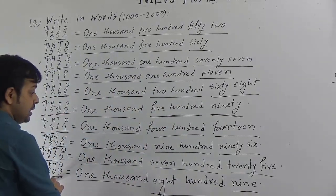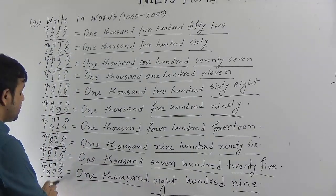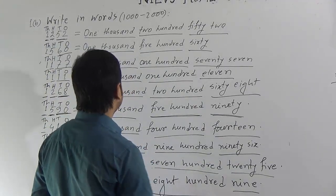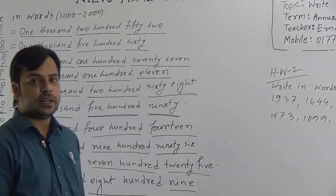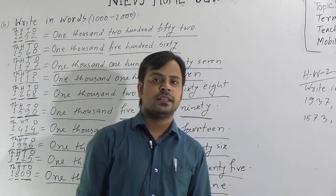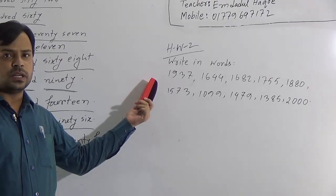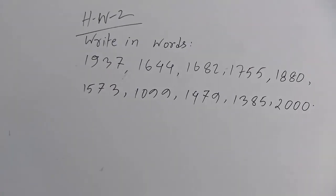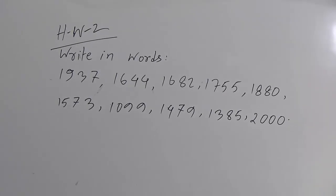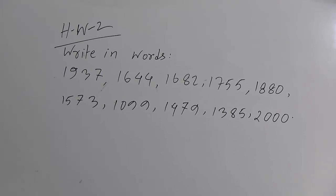As the tens position is 0, we have to read only the ones position, which is 9, so we write 9 here. Dear students, I hope all of you have understood today's topic. I have given you some numbers to write in words in your homework copy. Do your assigned homework following today's lecture.